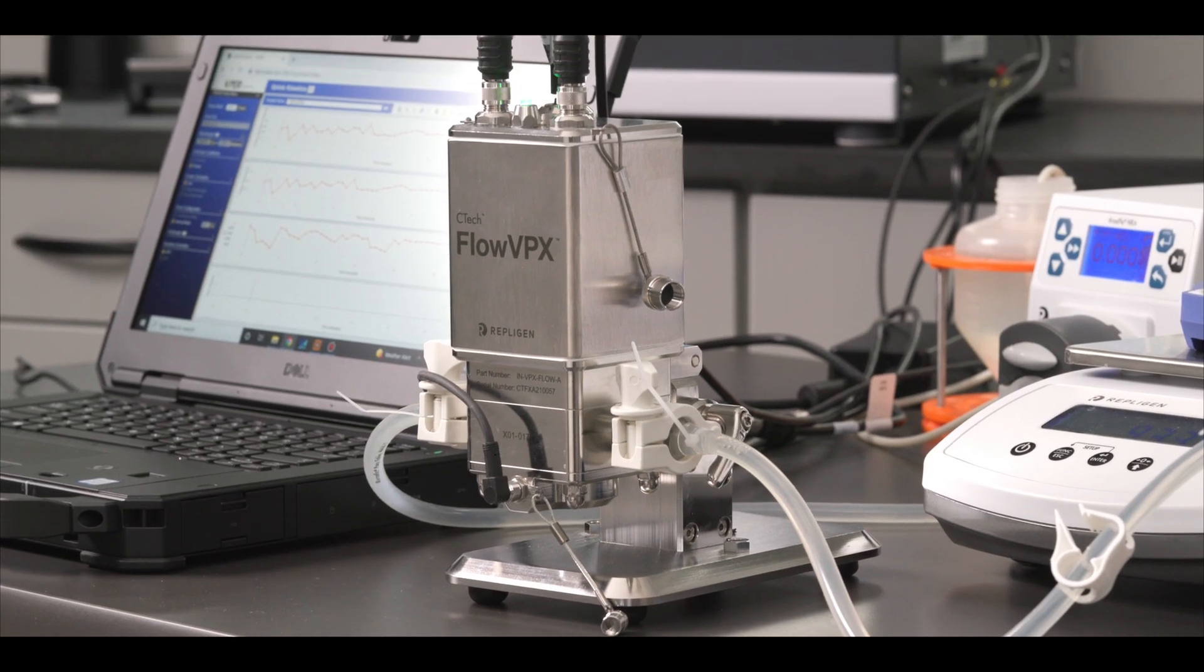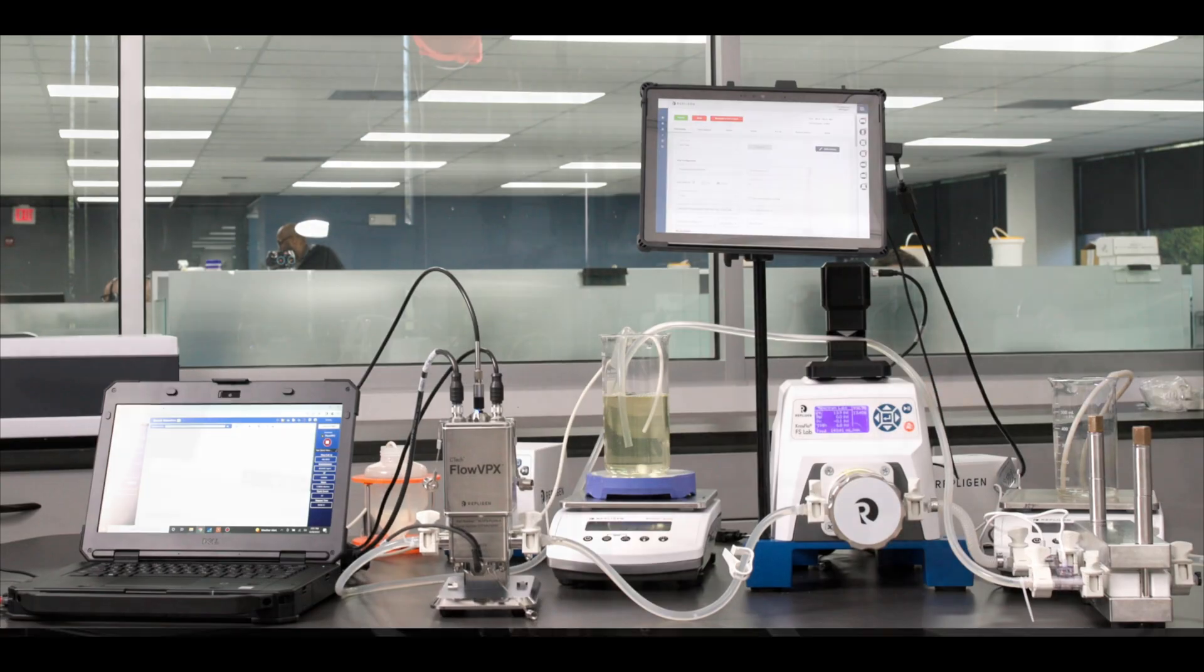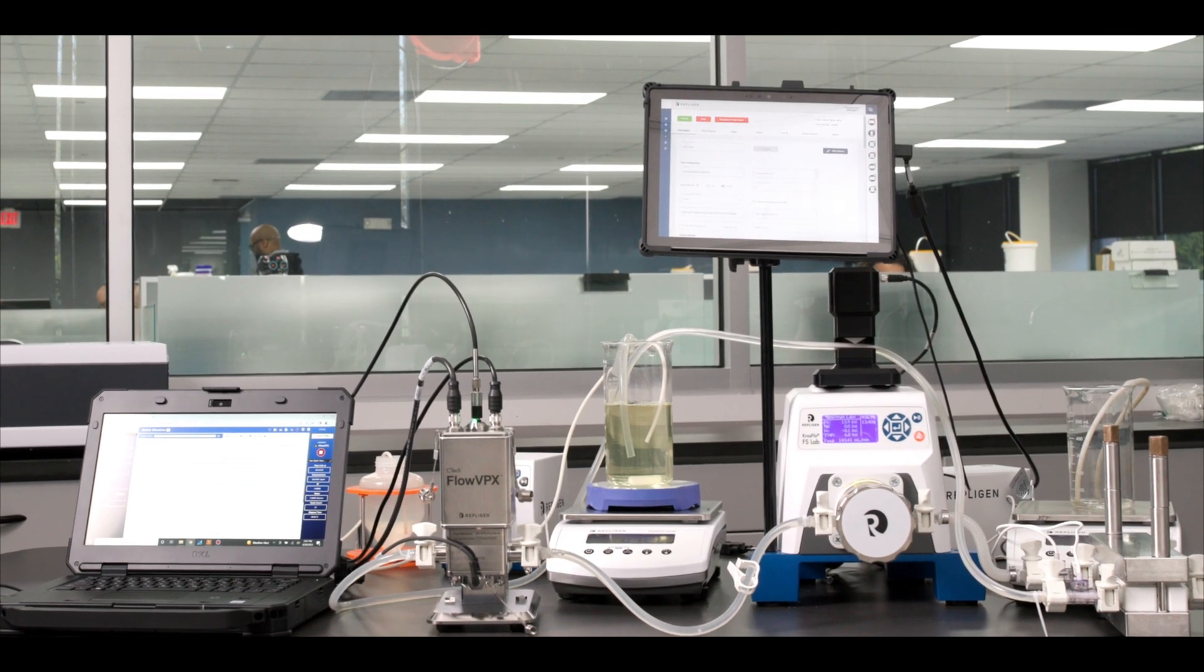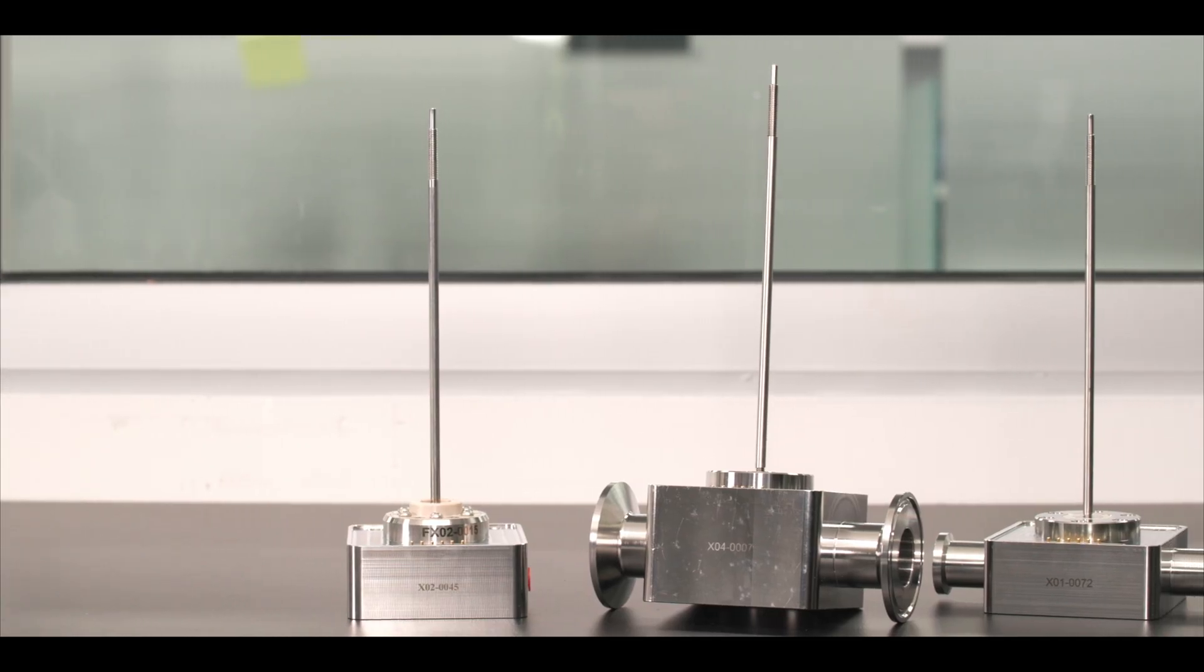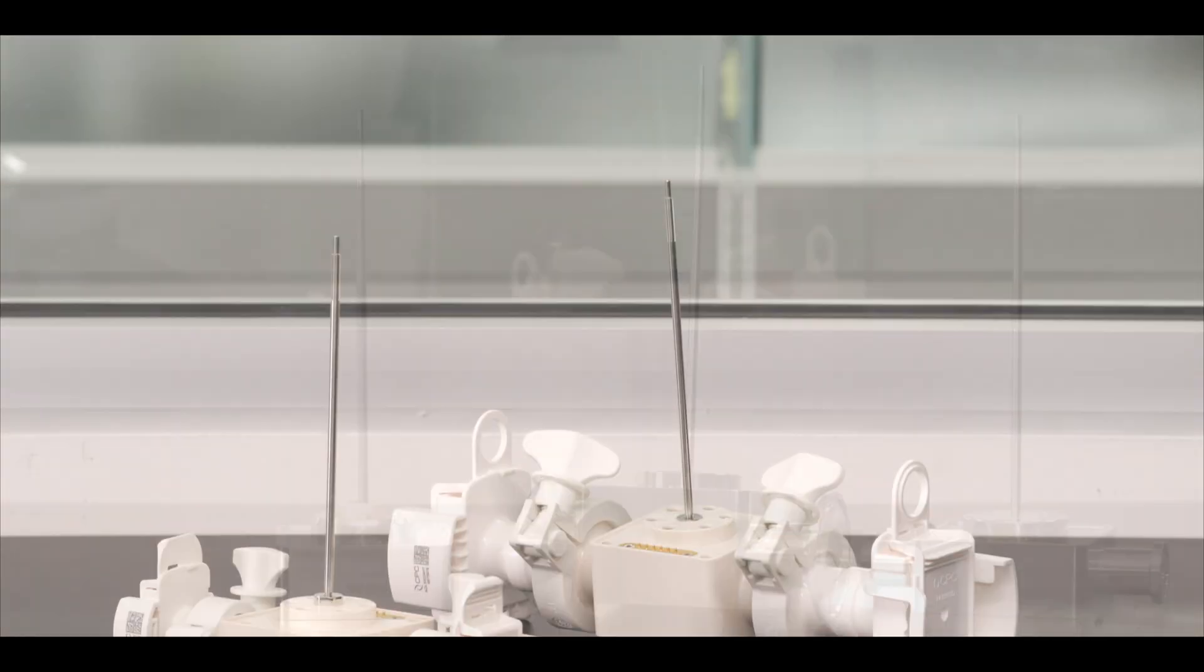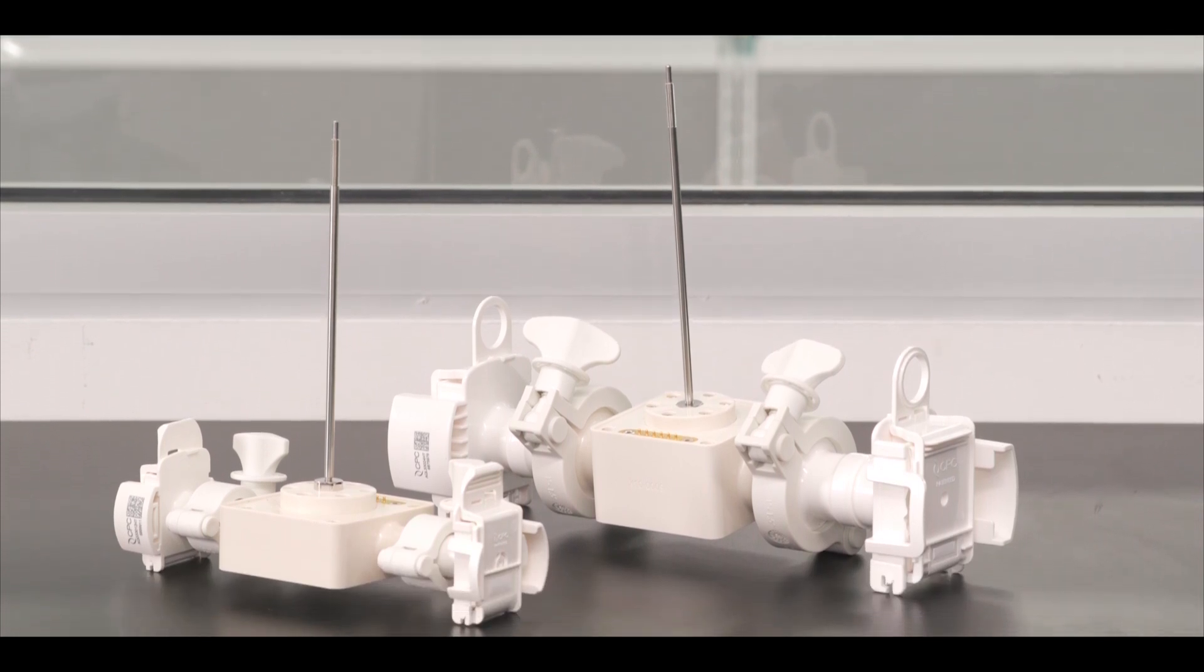The CTEC FlowVPX system works inline directly into your downstream process, creating a measure of control previously unheard of. The FlowVPX system offers low-maintenance stainless steel flow cells as well as single-use disposable flow cells to tailor to your lab and GMP needs.